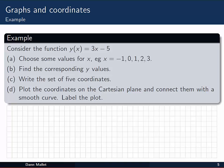Let's have a go at it ourselves. Here we've got a function y(x) = 3x - 5, and I'm stepping you through it. First of all, choose some x values. Find the corresponding y values that go with each of those x values. Write the set of 5 coordinates, plot them on the plane, and connect them with a smooth curve. And label your plot. Give yourself a moment now to try this one out.